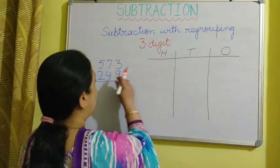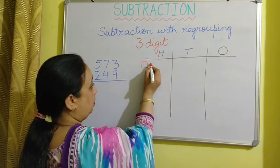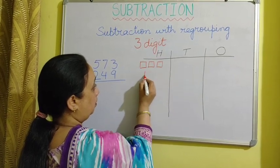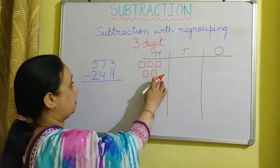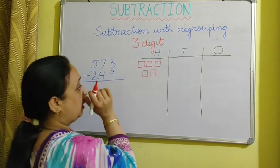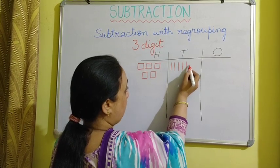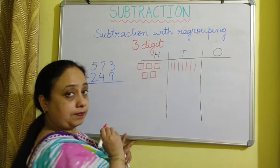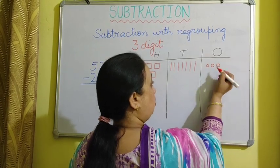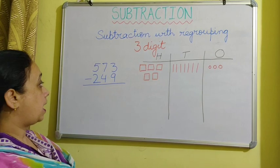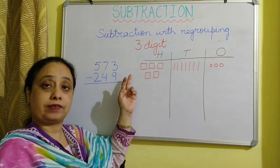We draw 5 squares in the hundreds column for 500. Then we draw 7 lines in the tens column for 7 tens. Then 3 circles in the ones column for 3 ones. Now we have to take away 249 from 573.